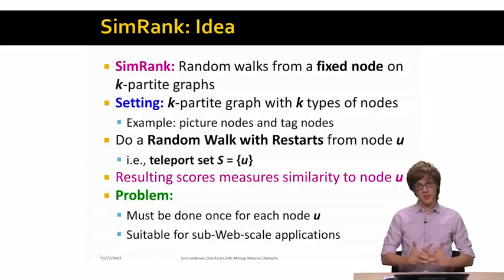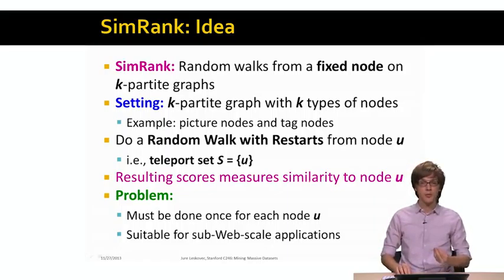Of course, the problem with this is that this is not the most scalable method, because it means that for every node, we have to compute a separate set of similarities. So this is something that works well for subweb-scale problems, but on a larger web-scale graph this may be too hard to do. And we don't want to have this teleport set to be individual nodes, but maybe sets of nodes, and then we are back to the personalized PageRank world that we talked about today.